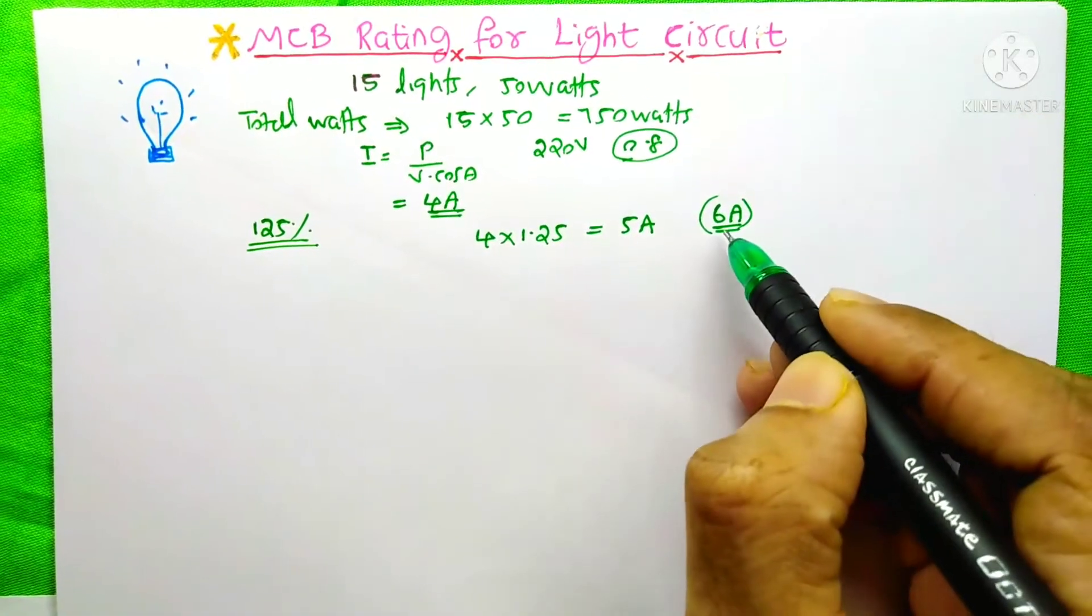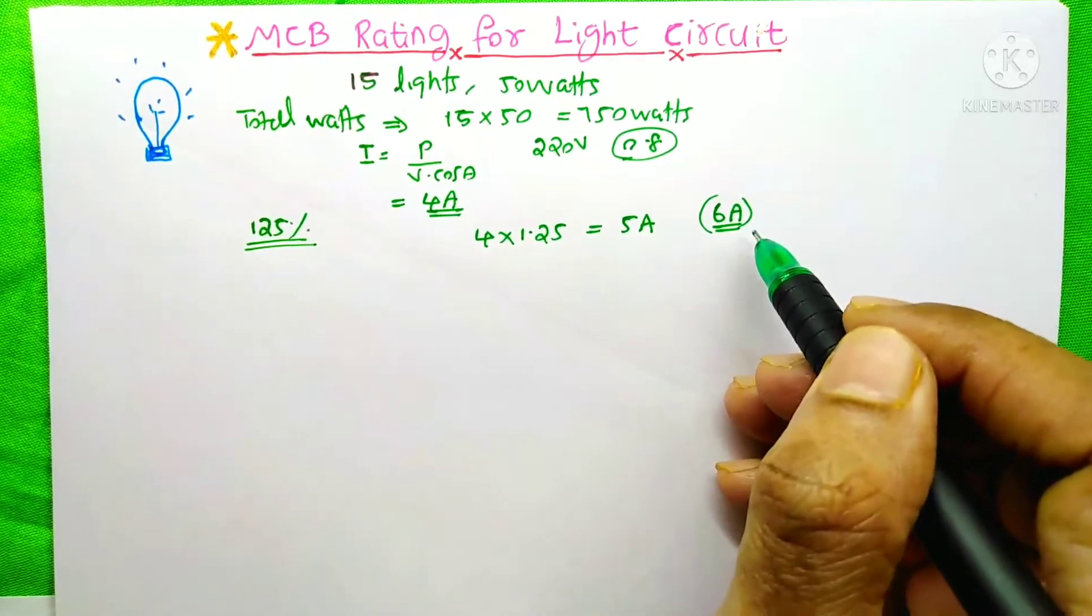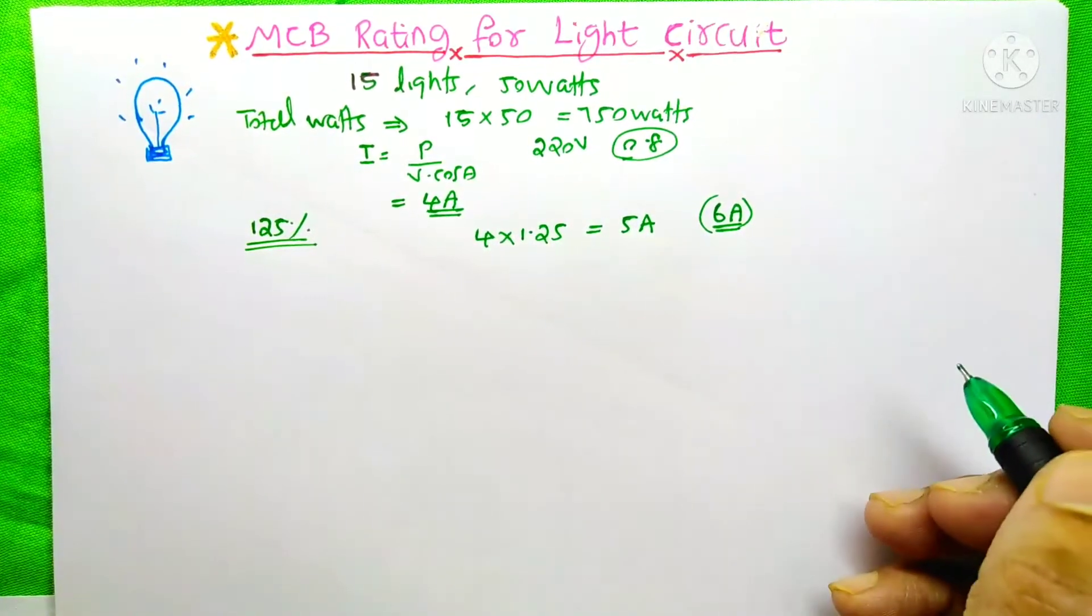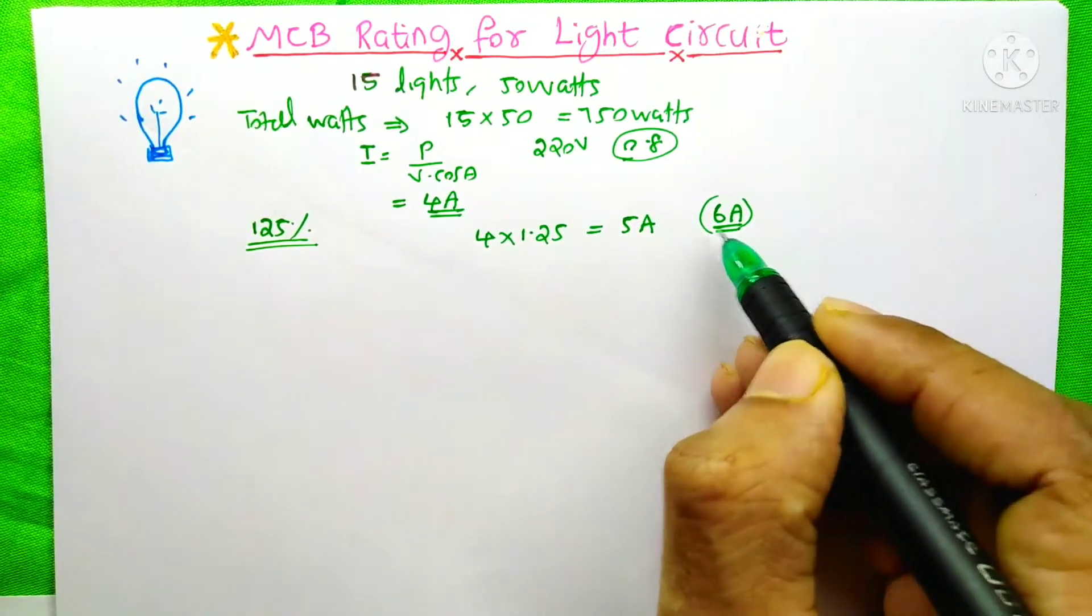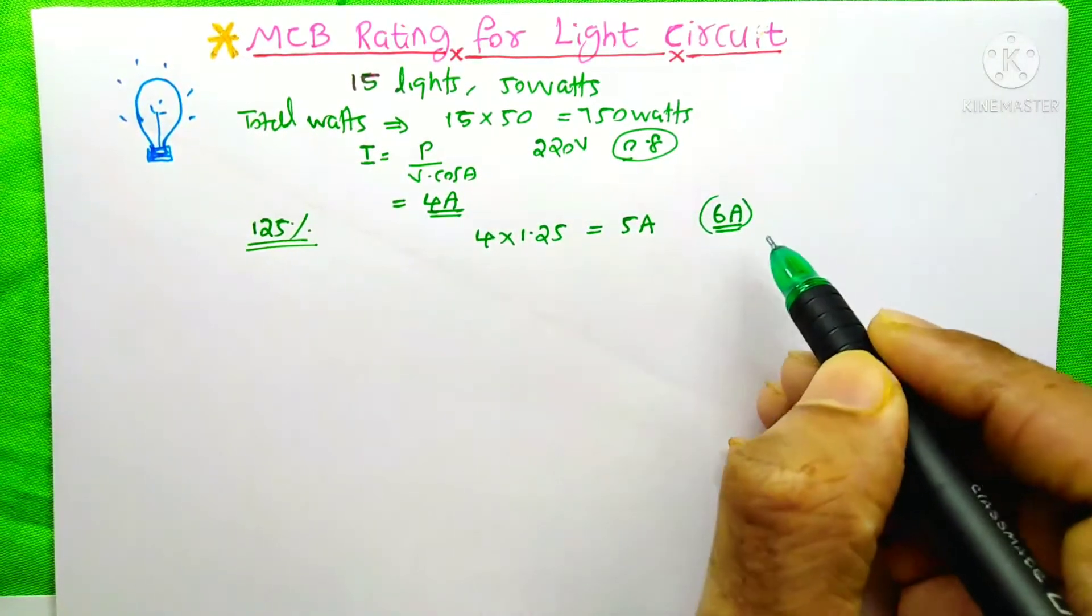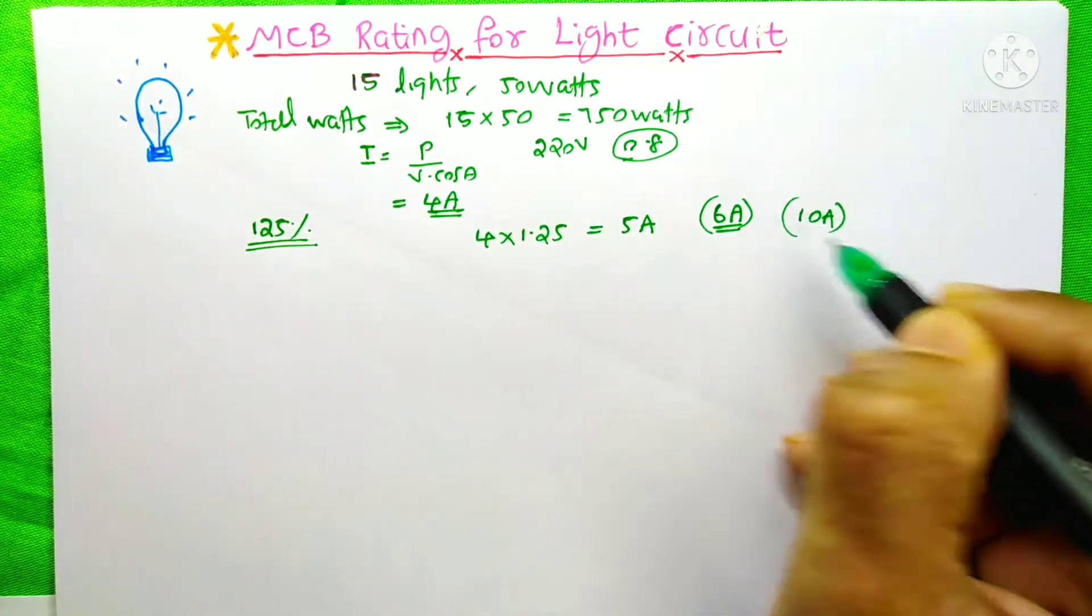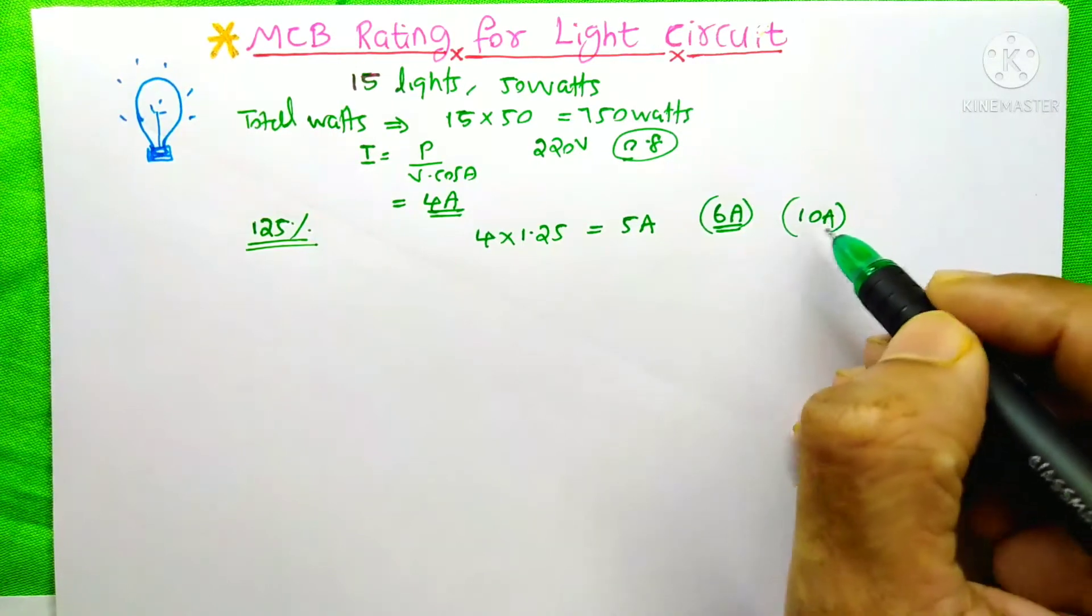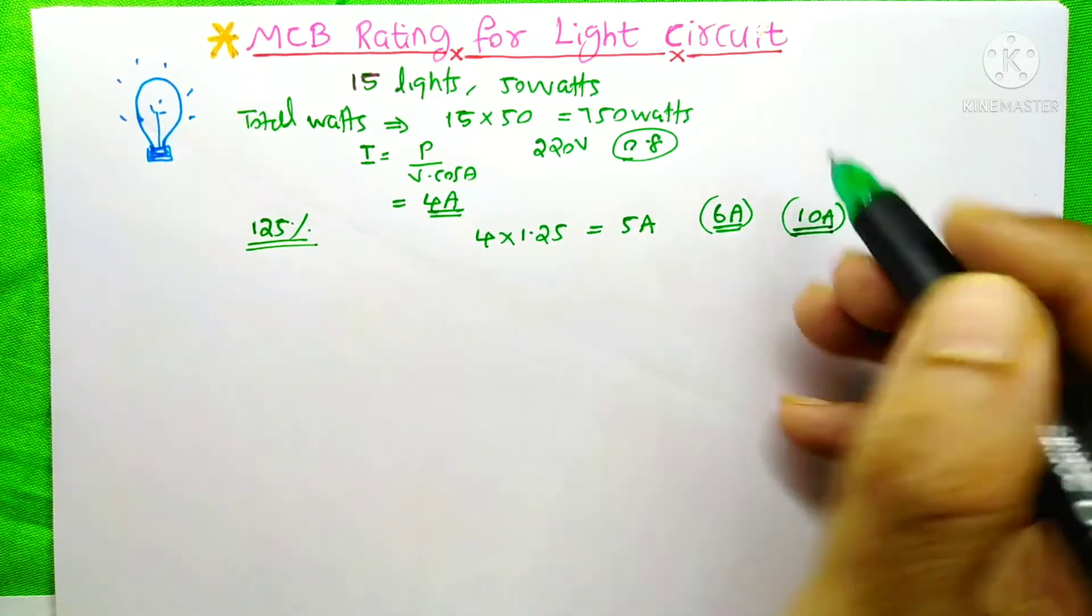But before purchasing this 6A, you need to understand the standard that exists in your country. Maybe in your country, for a single light circuit, the government authority allows only 10A. In some countries it's like that. So in such case, you need to purchase an MCB of 10A and connect it to your circuit.